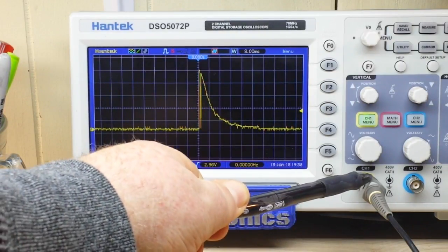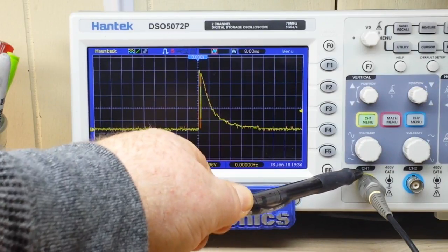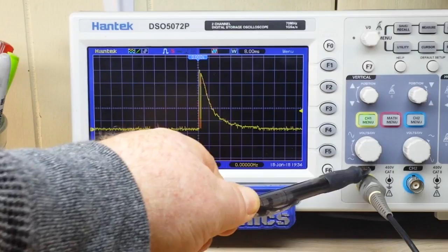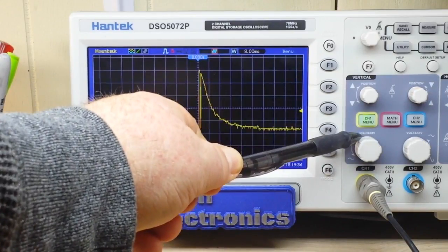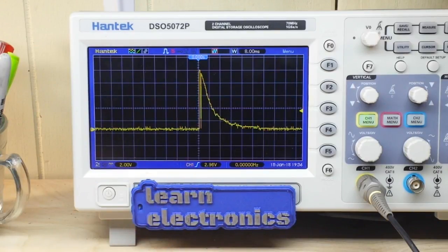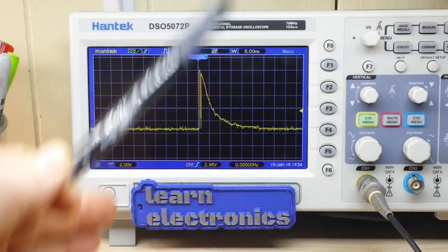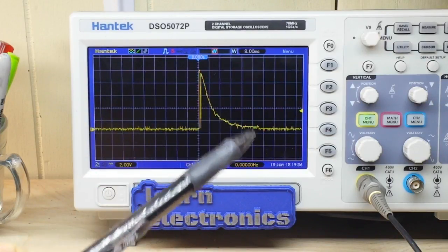So when we AC couple this channel of the scope we're simply putting a capacitor in between the probe and the front end of the scope. And there you can see it right there. When we're DC coupled this wire goes directly into the front end of the scope. What's the main characteristics of a capacitor?